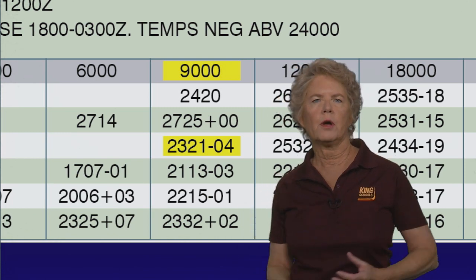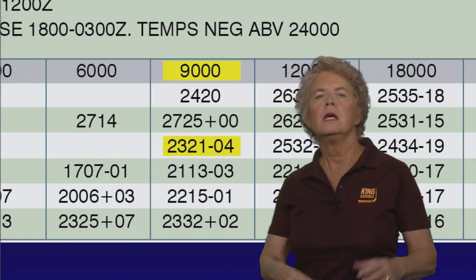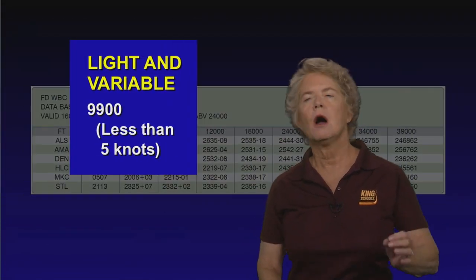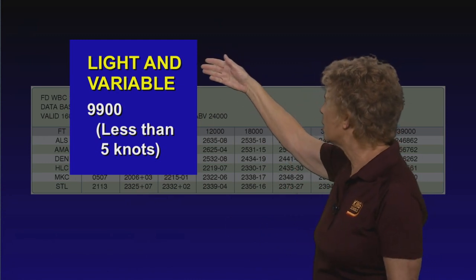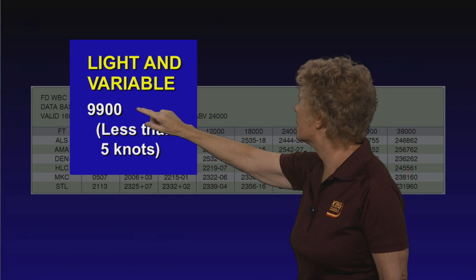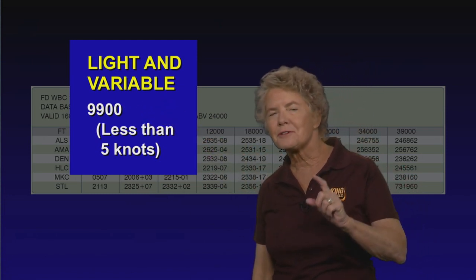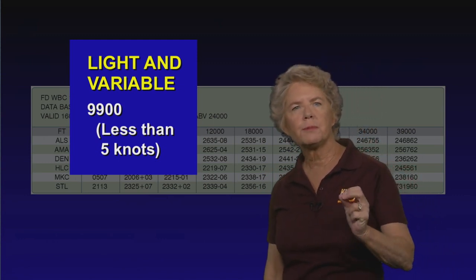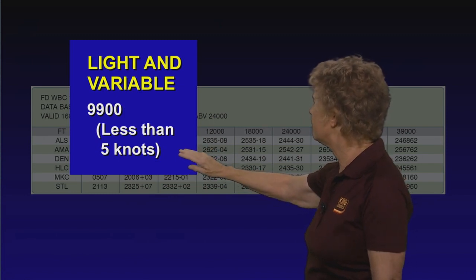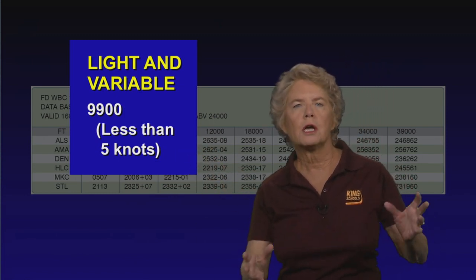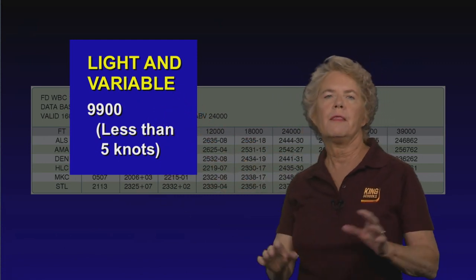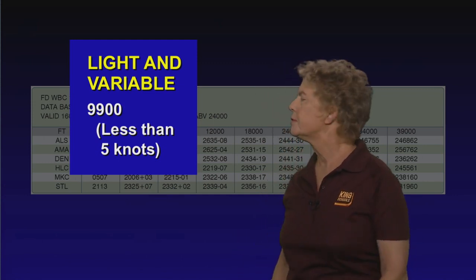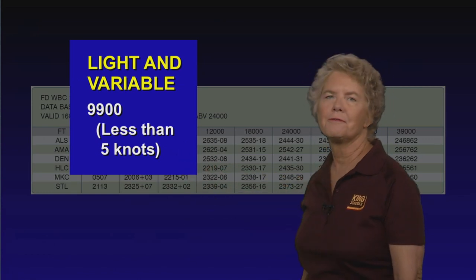One way of expressing winds that you do not see on this chart is the way they express it when the winds are forecast to be light and variable. A wind that is forecast to be light and variable is coded in the forecast as 9,900. You need to know that light and variable means the wind speed is less than 5 knots. So whenever in a forecast you see 9,900, that means they're forecasting the winds to be light and variable, with a wind speed less than 5 knots.